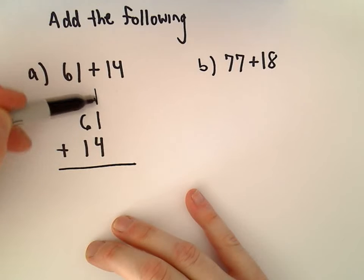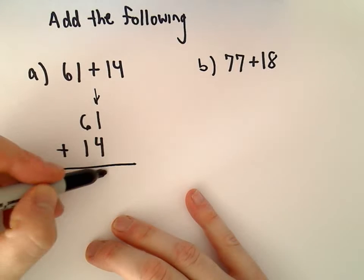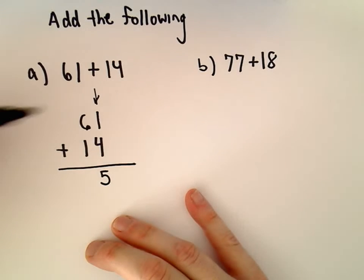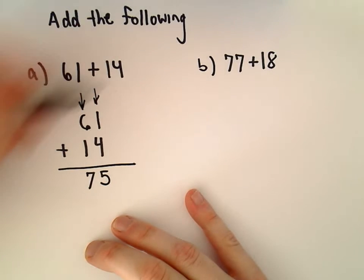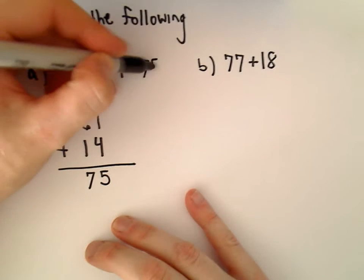So if we add the stuff in the ones column, 1 plus 4 is 5, so I'll just drop that down. And then I just go to the next column, 6 plus 1 is 7, so 61 plus 14 is going to equal 75.